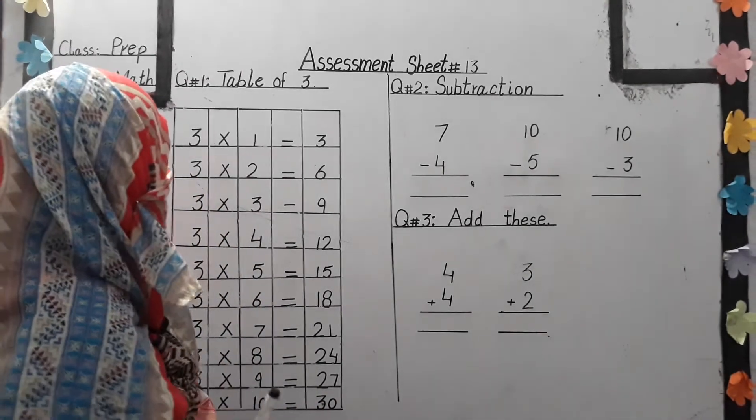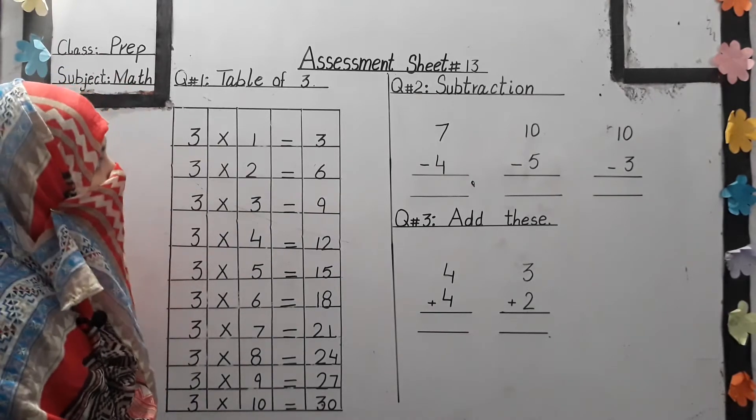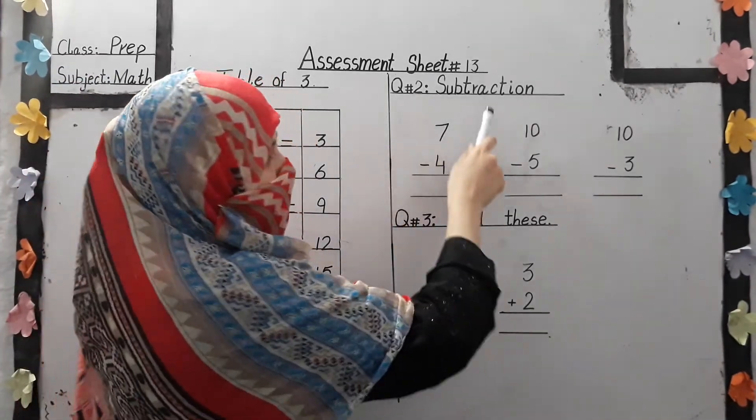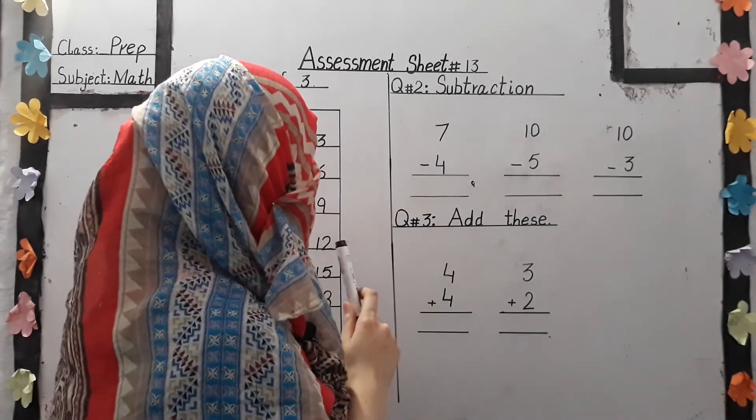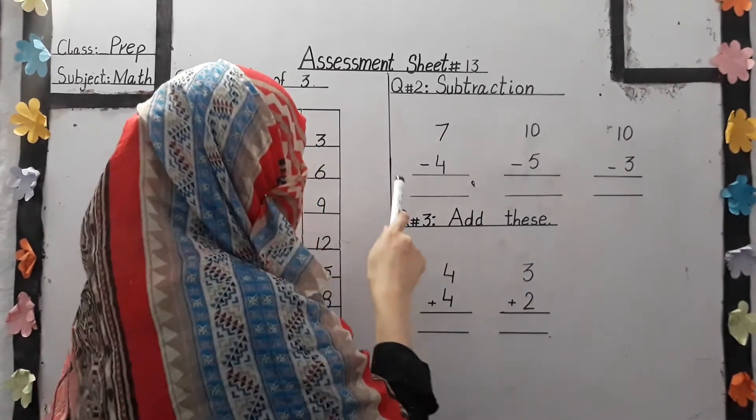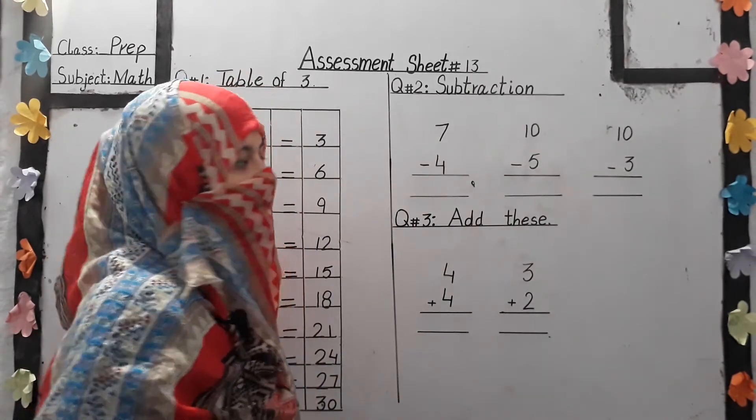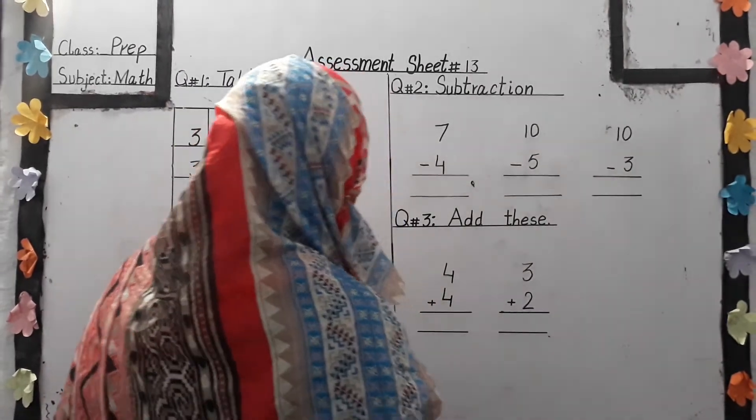Ok, students. Students learned table of 3. And now our question number 2 is subtraction. Students, we have learned subtraction using number lines. Now we have to solve these problems.